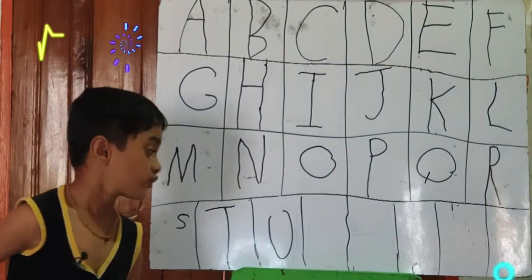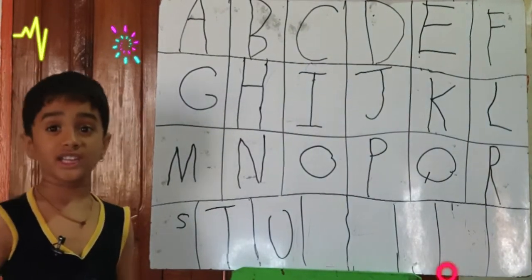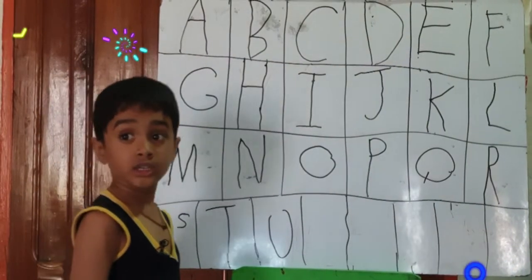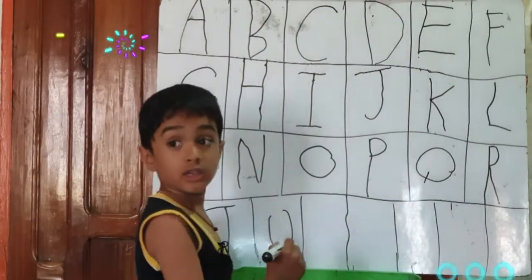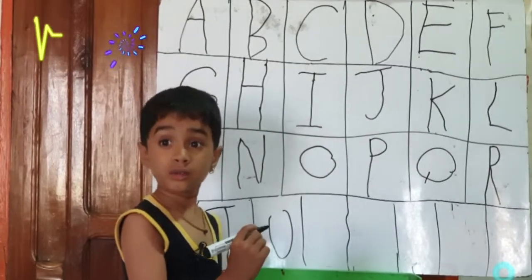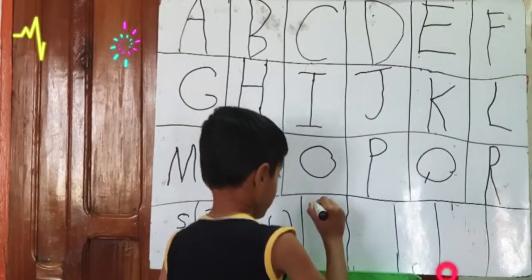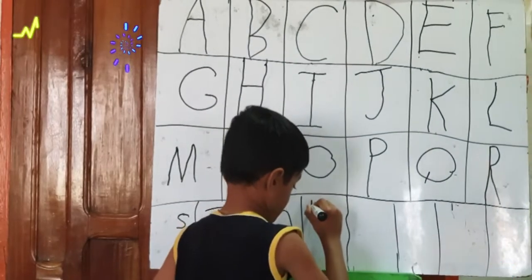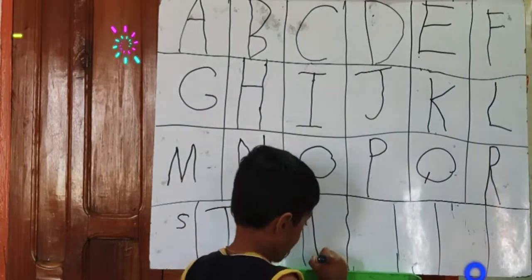Now I'm learning V. One standing line, one cross up.